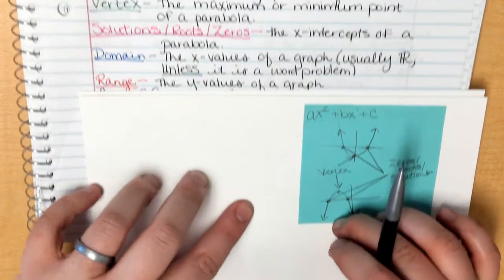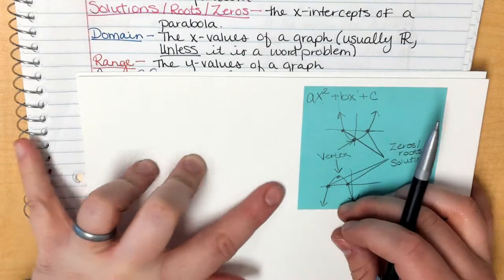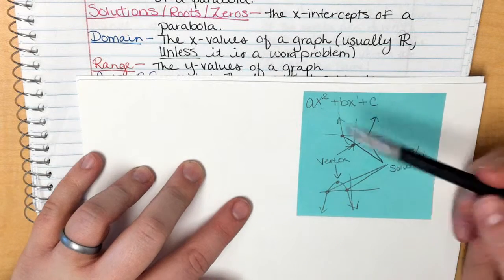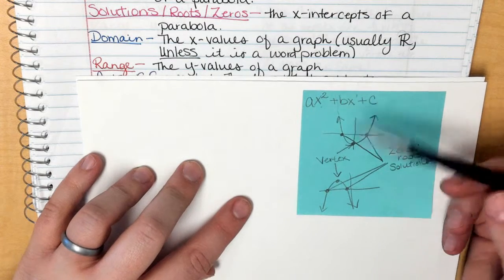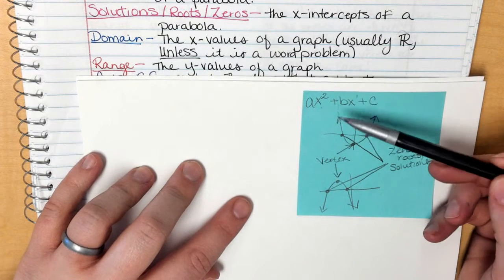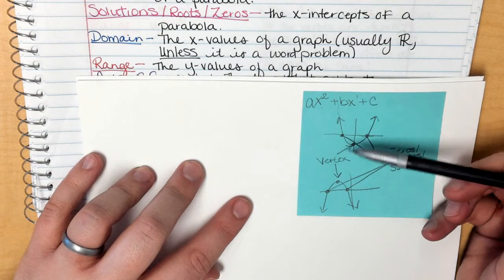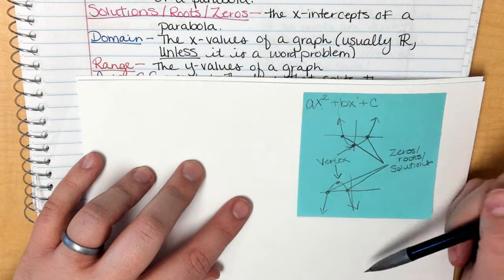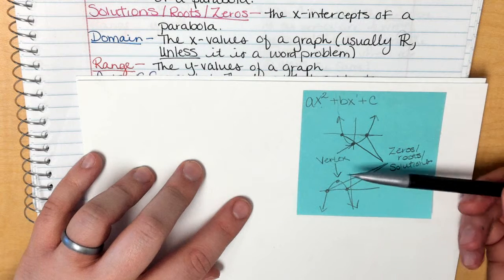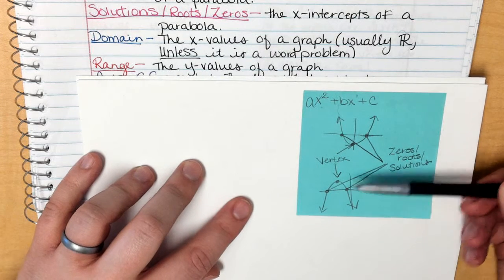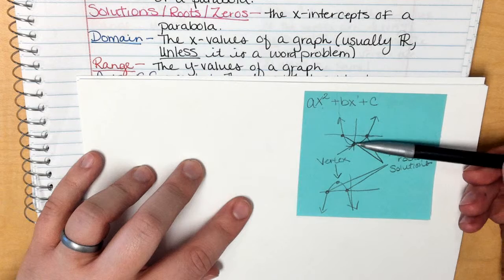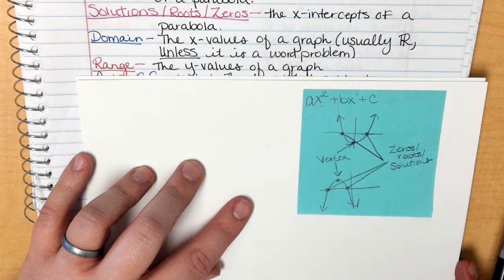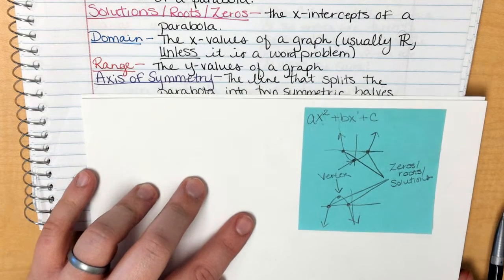Range is the y-values of the graph. We will talk more about it in a moment because it is not going to be all real numbers. The parabola might go up or down forever, but the vertex is a stopping point, so the range is not all real numbers.